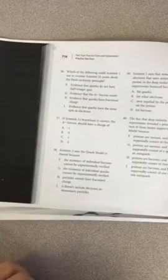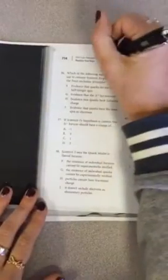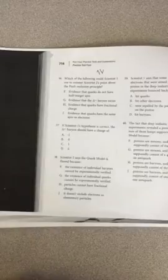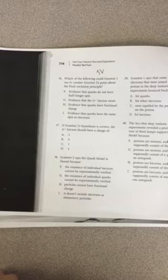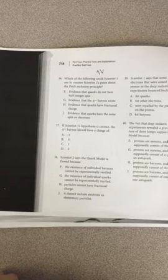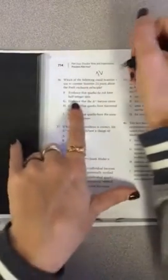36. Which of the following could scientist one use to counter scientist two's point about the Pauli exclusion principle? So he's saying that the particles don't follow this rule, where the half integer spins have to be the other way. So, that means that scientist one says that you can have particles that do have a plus two charge. So the answer here is going to be G. No, it's not. The answer here is going to be F. Sorry.